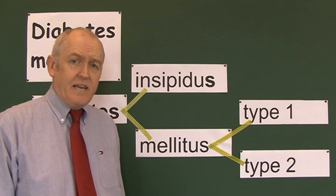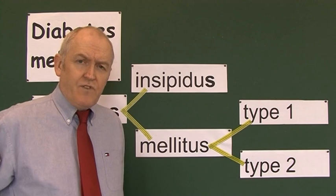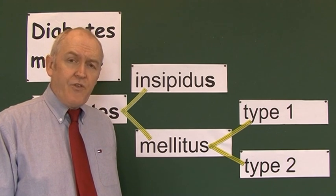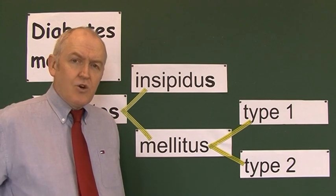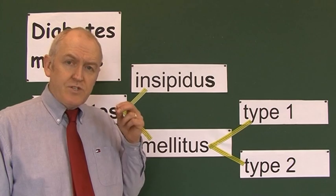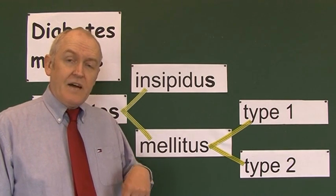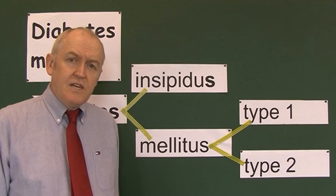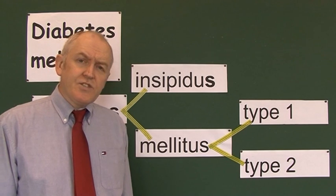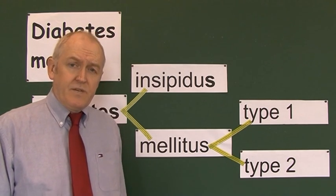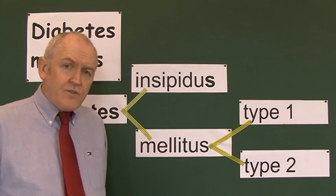Given that the patient is passing such large volumes of urine, it's not surprising that they become thirsty and dehydrated — they drink a lot, which is called polydipsia. So first there's polyuria, and to compensate the patient feels very thirsty and has polydipsia. There are actually two types of diabetes insipidus: the cranial type and the nephrogenic type.